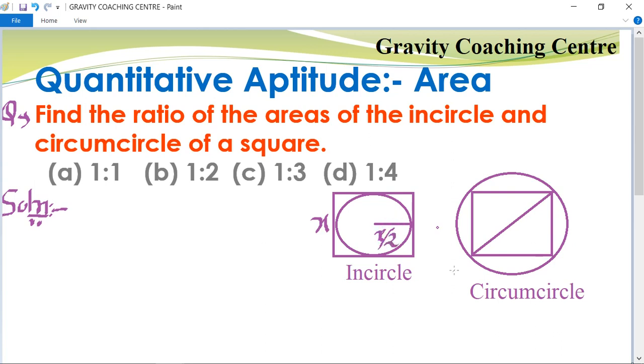And for the circumcircle, the square is the same, so its side is x. The diagonal will be root 2x. So the radius of the circumcircle is root 2x upon 2.